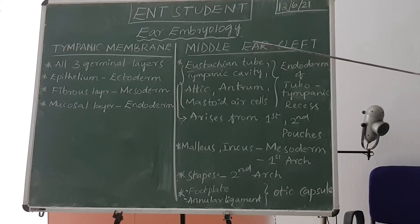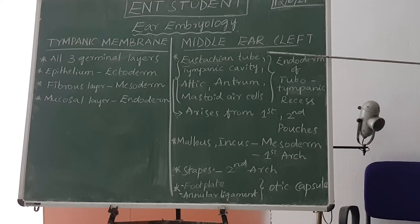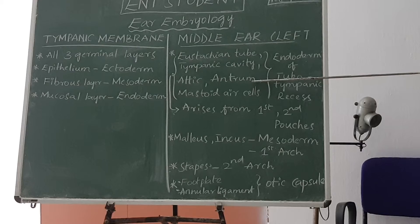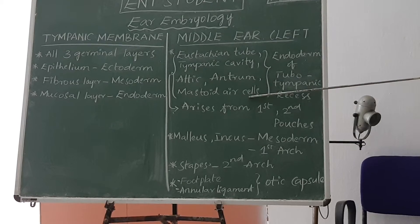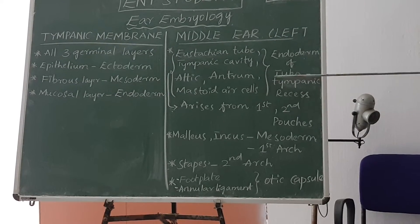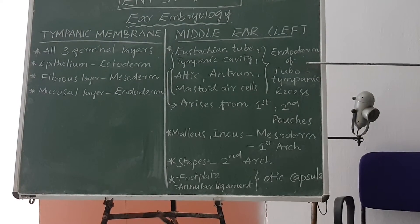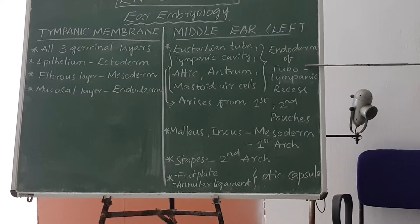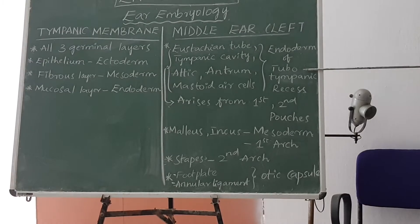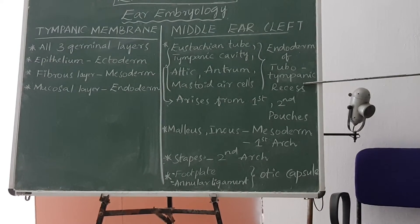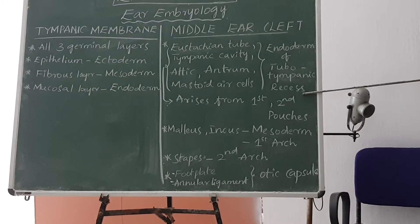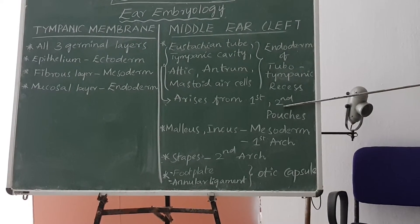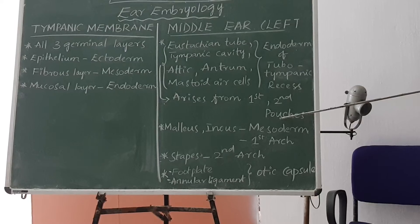Regarding the middle ear cleft: the eustachian tube, tympanic cavity, attic, antrum, and mastoid air cells — all parts of the middle ear — are derived from endoderm. This is from the tubotympanic recess, especially from the 1st and 2nd pharyngeal pouches, which are endodermal in origin.